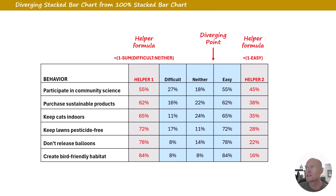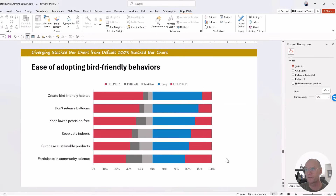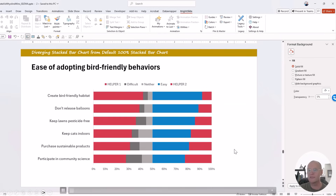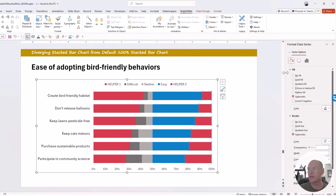Helper column one uses a formula: equals (1 minus the sum of 'difficult' and 'neither') — basically giving the difference from 100%. Helper column two, since there's only one column to the right of the diverging point, is simply: 1 minus whatever is in that 'easy' cell. Once you've set that up, select the entire table and insert a 100% stacked bar chart. Then select each helper column series, go to the paint bucket, and set them to No Fill.